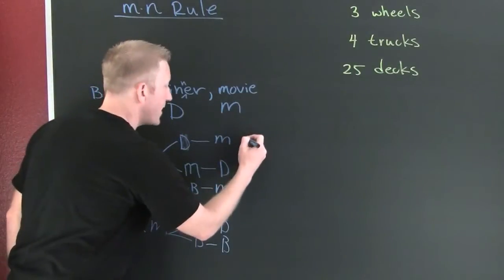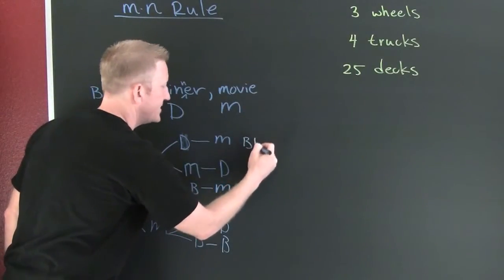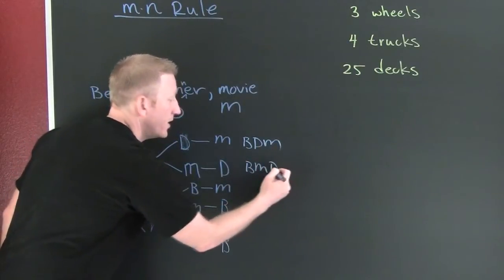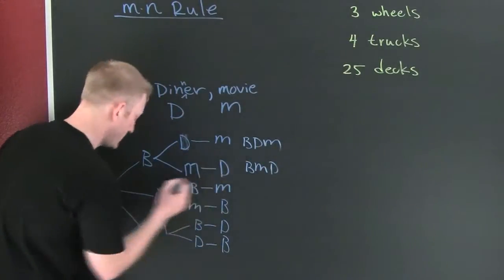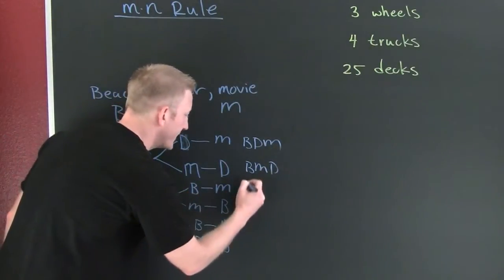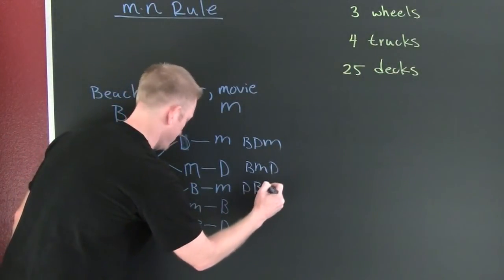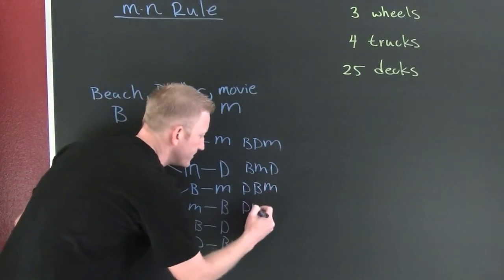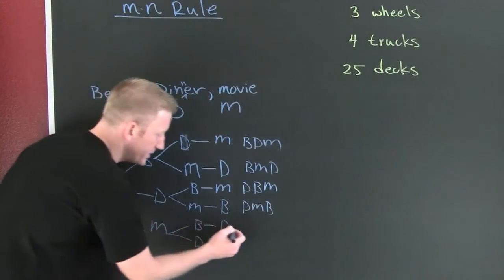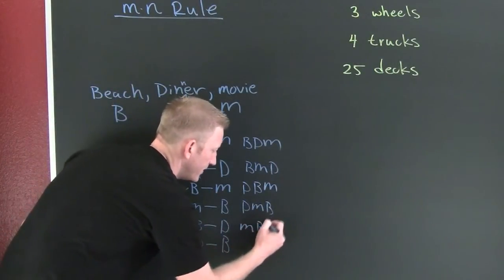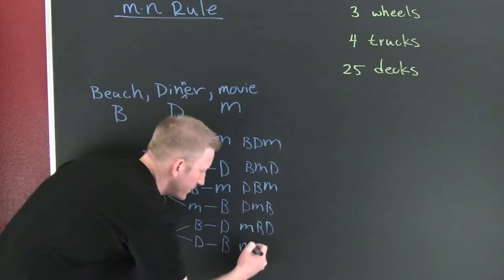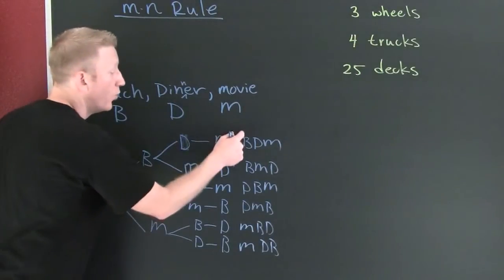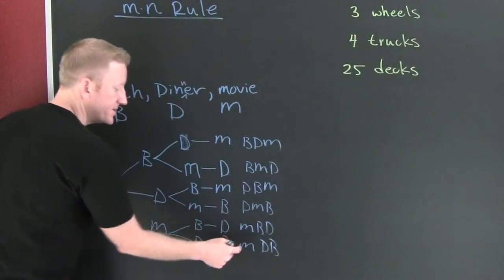So then, this is: beach, dinner, movie. Beach, movie, dinner. Remember, in this scenario order matters. Dinner, beach, movie. Dinner, movie, beach. Movie, beach, dinner. Movie, dinner, beach. So here we see one, two, three, four, five, six.